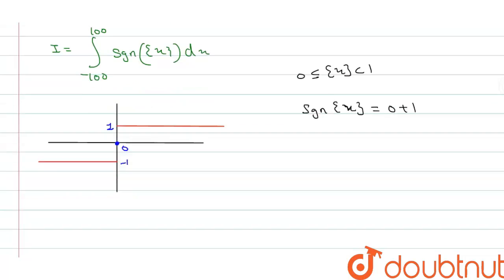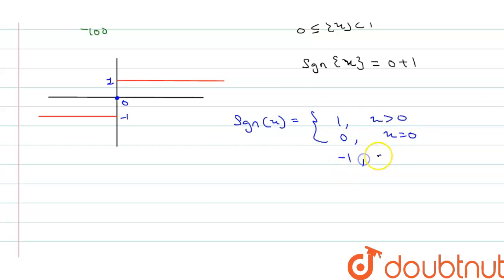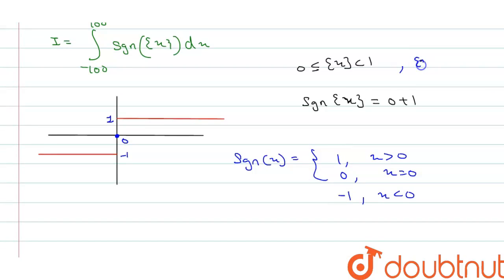We know that signum of x equals 1 when x is greater than 0, equals 0 when x equals 0, and equals minus 1 when x is less than 0. So when the fractional part of x is greater than 0, signum equals 1, and when the fractional part of x equals 0, signum equals 0. Therefore signum of (fractional part of x) equals 1 almost everywhere.